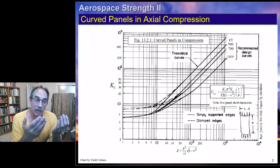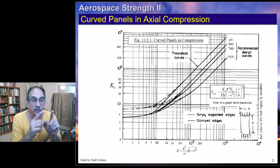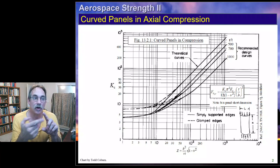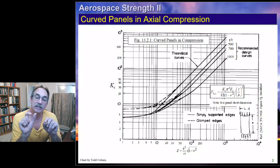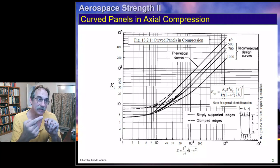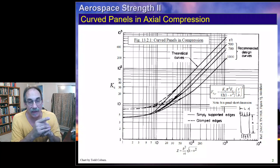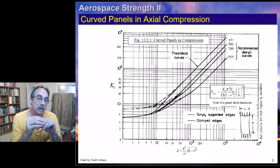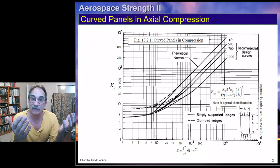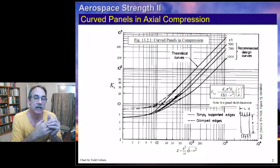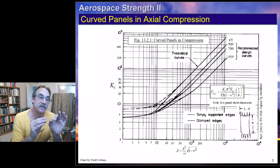If we have a curved panel in compression, you'll notice from a little sketch on here that the long dimension is the straight dimension. The curved dimension is the loaded dimension. And that defines our B as that smaller curved dimension, or the loaded dimension. We're going to plug in that B into this formula for Z. We're going to plug in the radius of curvature of that structure — which would be the diameter of an aircraft, if it was an aircraft part — the thickness of the skin, and the Poisson's ratio to calculate Z.